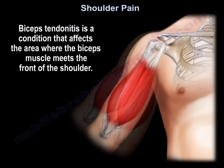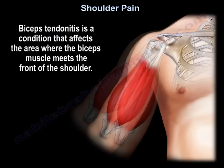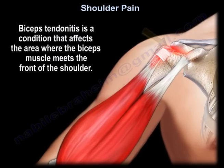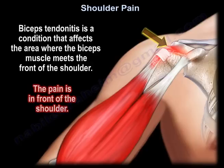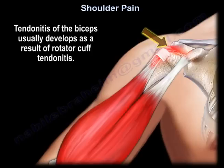Biceps tendinitis is a condition that affects the area where the biceps muscle meets the front of the shoulder. The pain is in front of the shoulder. Tendinitis of the biceps usually develops as a result of rotator cuff tendinitis.